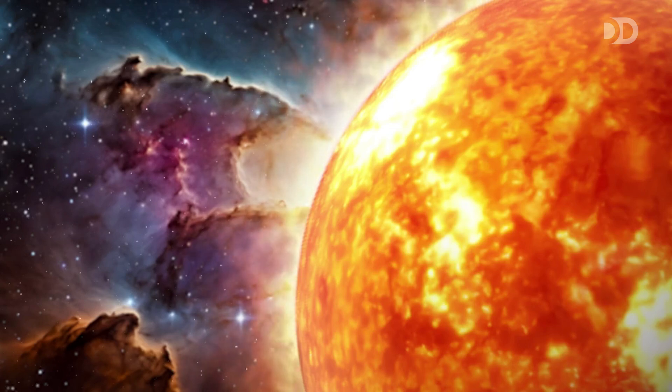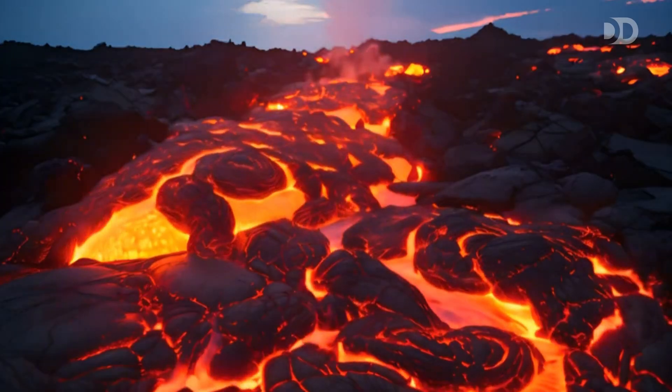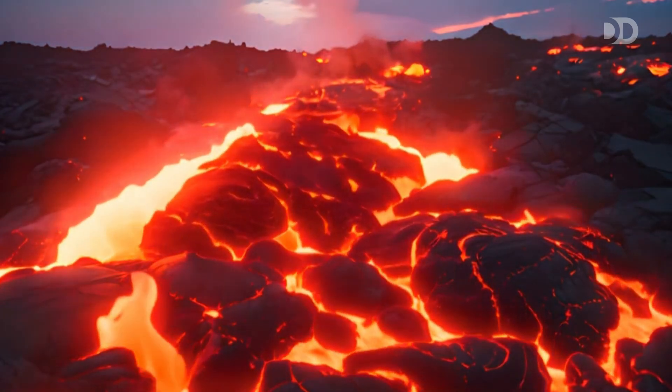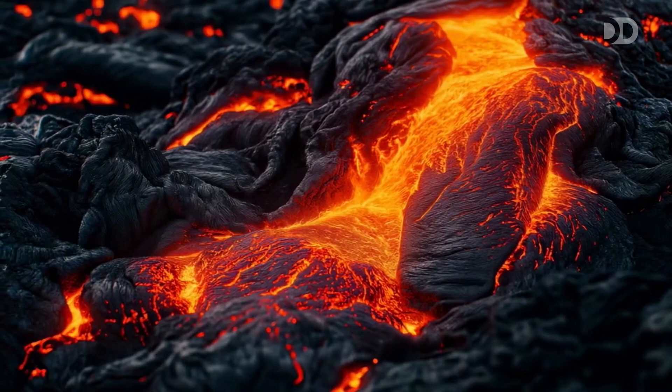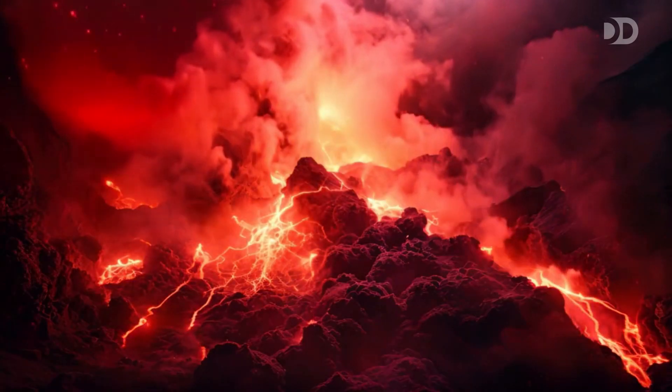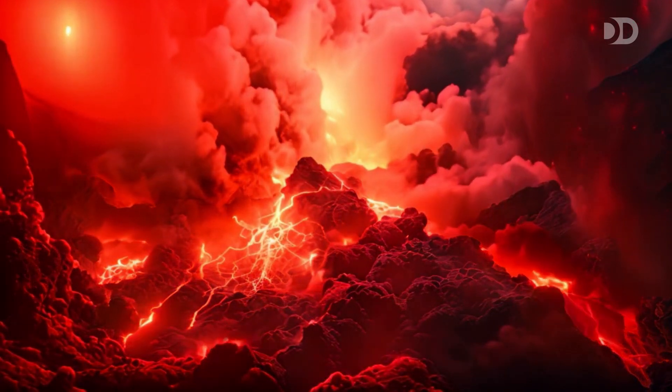The crushing atmospheric pressure is over 90 times that of Earth, and the air is thick with toxic gases, making Venus an incredibly hostile world. Volcanic plains and fractured rocky landscapes reveal a world in constant geological upheaval. Volcanoes may still be active today, reshaping the surface and releasing gases into the atmosphere, while vast highland regions and deep valleys hint at a tumultuous past.